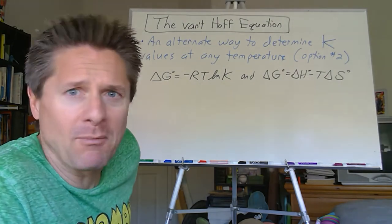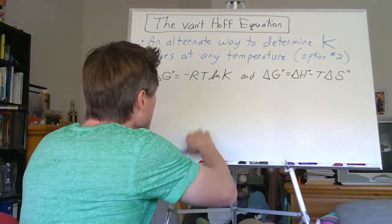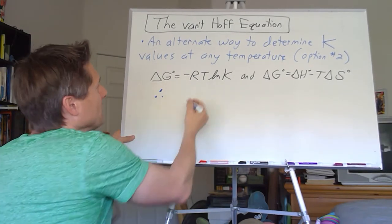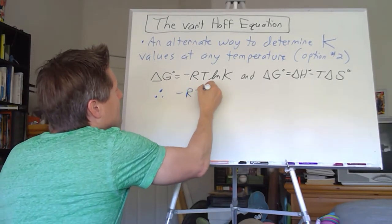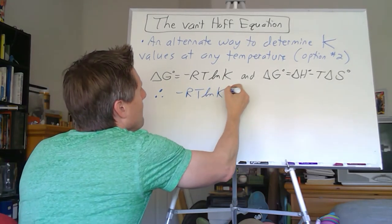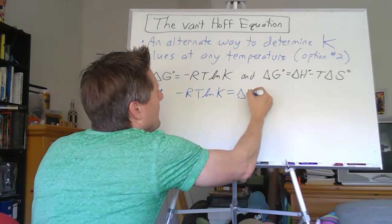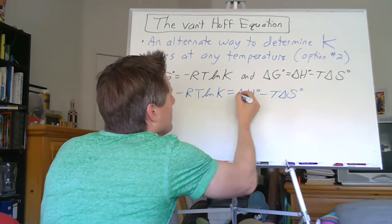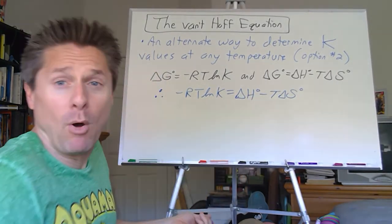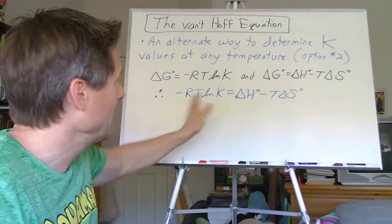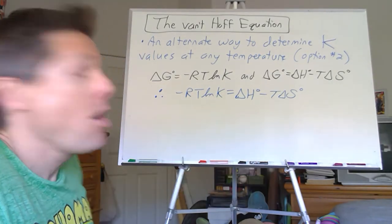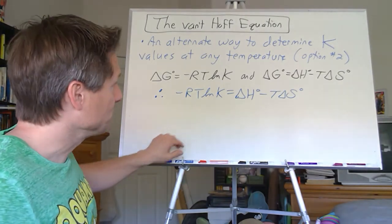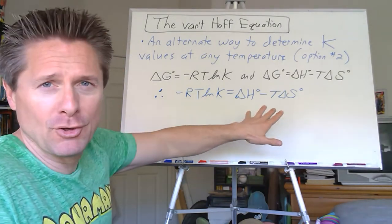If A equals C and B equals C, doesn't A equal B? There's some term for that in math. Anyway — therefore — the symbol for therefore: –RT ln K must equal ΔH° – TΔS°, because they both equal ΔG°. Therefore they must equal each other, and we've got ourselves a new equation. Let's play with it.